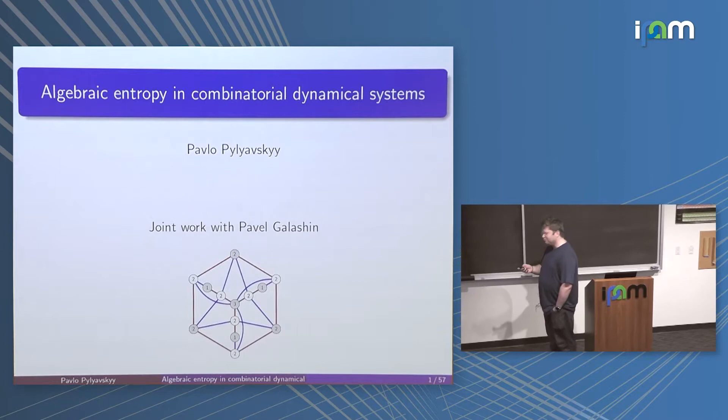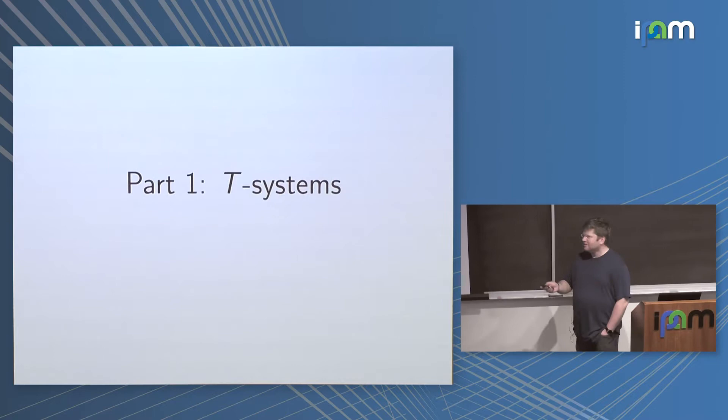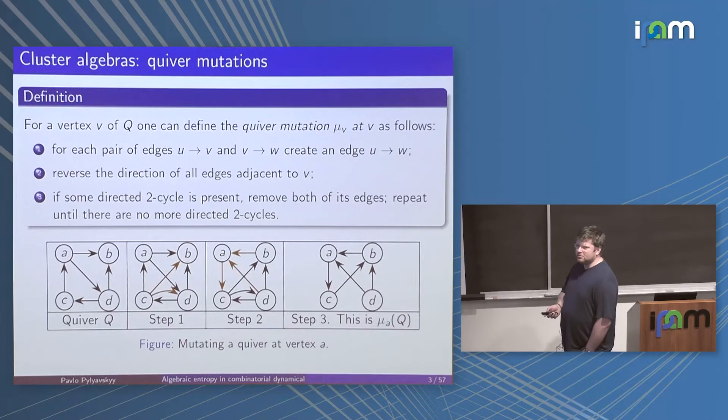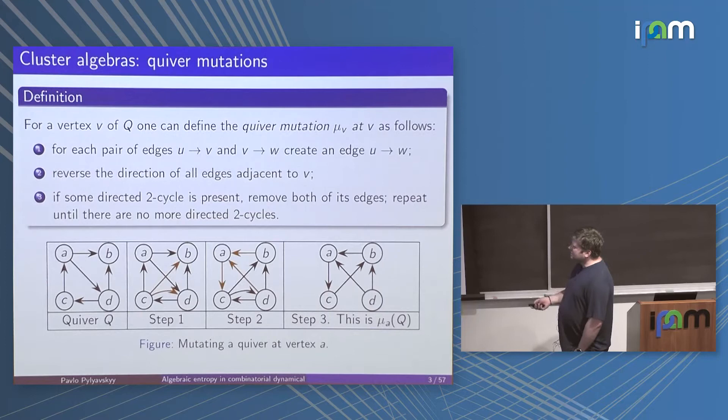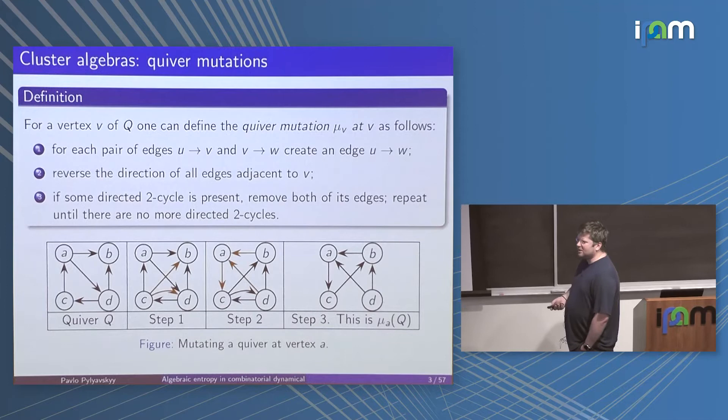The first example is called T-Systems. I will define cluster mutations for you. Many people have seen it; if you have, bear with me. If you haven't, I usually tell people that if you see it for the first time, you would ask yourself why on earth would you study that. It seems like a weird definition, but you need to trust that this actually arises in nature — in fact, in many, many situations in nature.